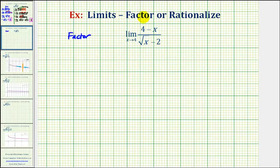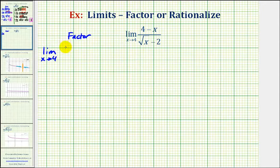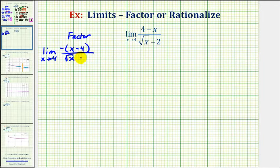To use this method, we should first recognize that the numerator has the constant followed by the variable, and the denominator has the variable followed by the constant. So we're going to change the order of the terms in the numerator and also factor out a negative one. So we'd have the limit as x approaches four of negative, then the quantity positive x minus four. Notice how we still have a positive four and a negative x as in the original function. We'll leave the denominator the same: the square root of x minus two.